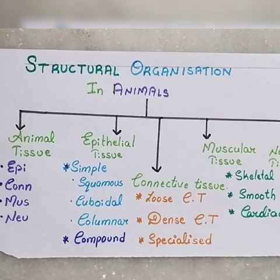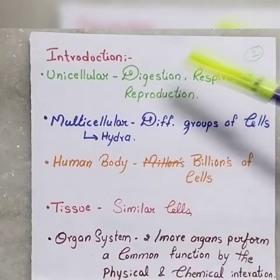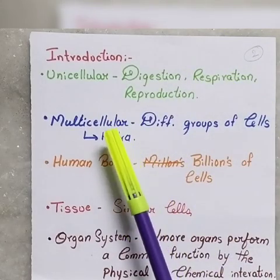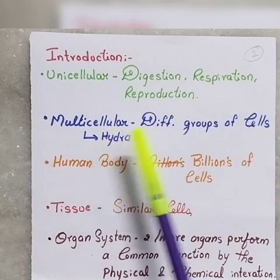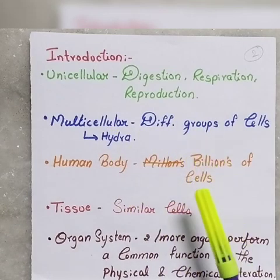Now we start with the introduction. First, we have unicellular organisms. Unicellular organisms perform digestion, respiration, and reproduction all within a single cell.